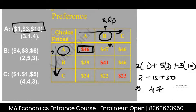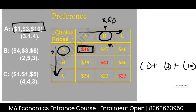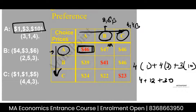Let's see bundle C. Bundle C is 4, 4, 3. Prices are the same — 1, 3, 10. How much do I spend? 4 plus 12 plus 30 = 46. Is this affordable? It is affordable. Did I choose this? No — I chose bundle A. So at prices A (1, 3, 10), the chosen bundle was A when B was not affordable and C was affordable.